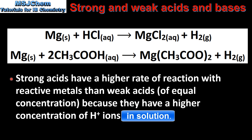Strong acids have a higher rate of reaction with reactive metals — those above copper in the reactivity series — than weak acids of equal concentration, because they have a higher concentration of hydrogen ions. Strong acids dissociate completely, therefore they have a higher concentration of hydrogen ions than weak acids.